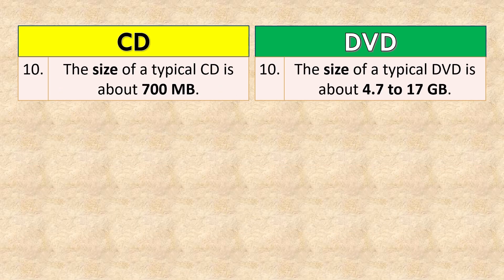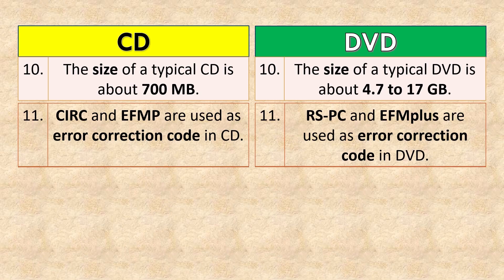The size of a typical CD is about 700 MB, while the size of a typical DVD is about 4.7 to 17 GB. CERC and EFMP are used as error correction codes in CD, whereas RSVC and EFMP are used as error correction codes in DVD.